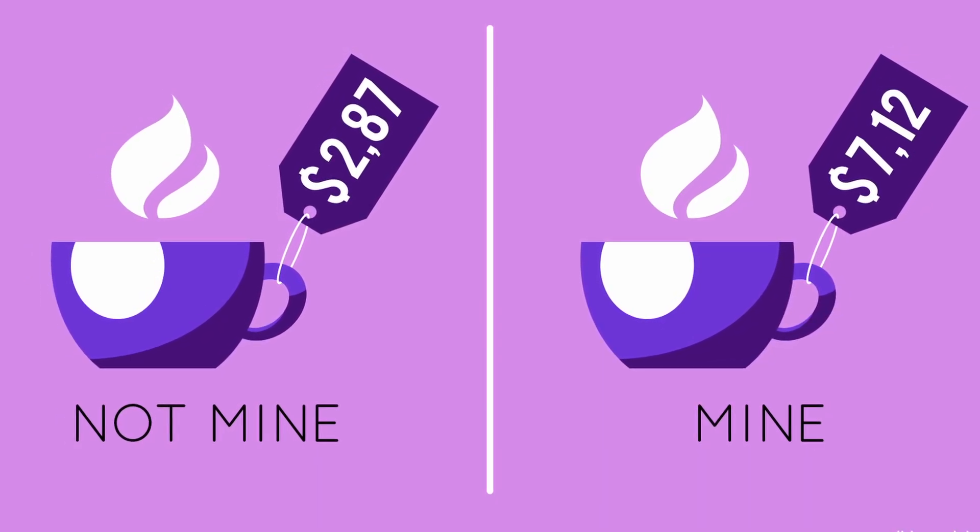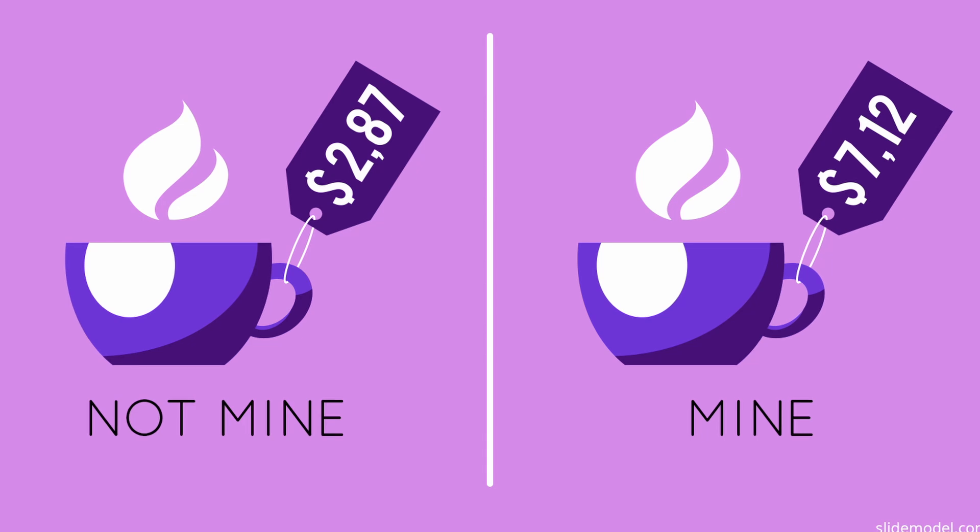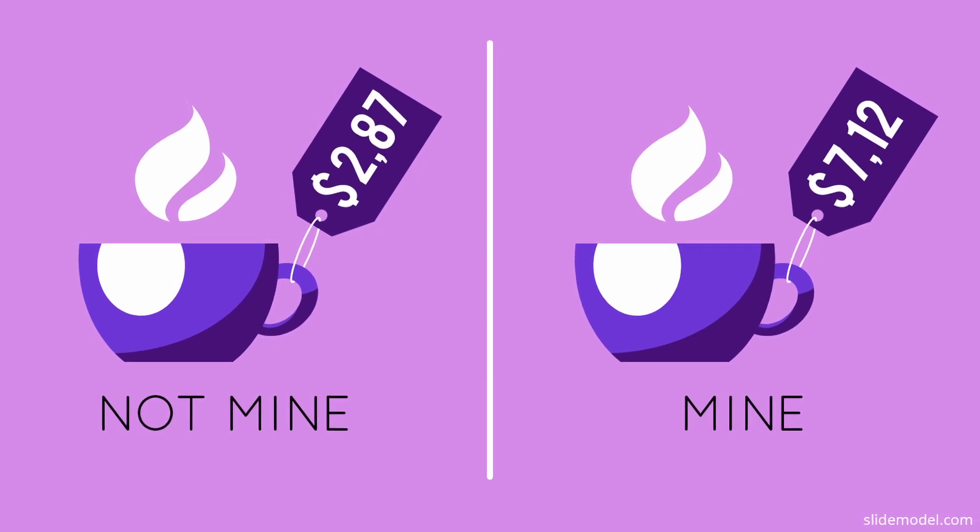What that tells us is that the simple act of owning something makes us value it a lot more. One way this affects our everyday decision making is it can cause us to hold on to things for too long — because the endowment effect means we hold on to what we currently have far too strongly rather than letting go and pursuing something that could be even better in the future.